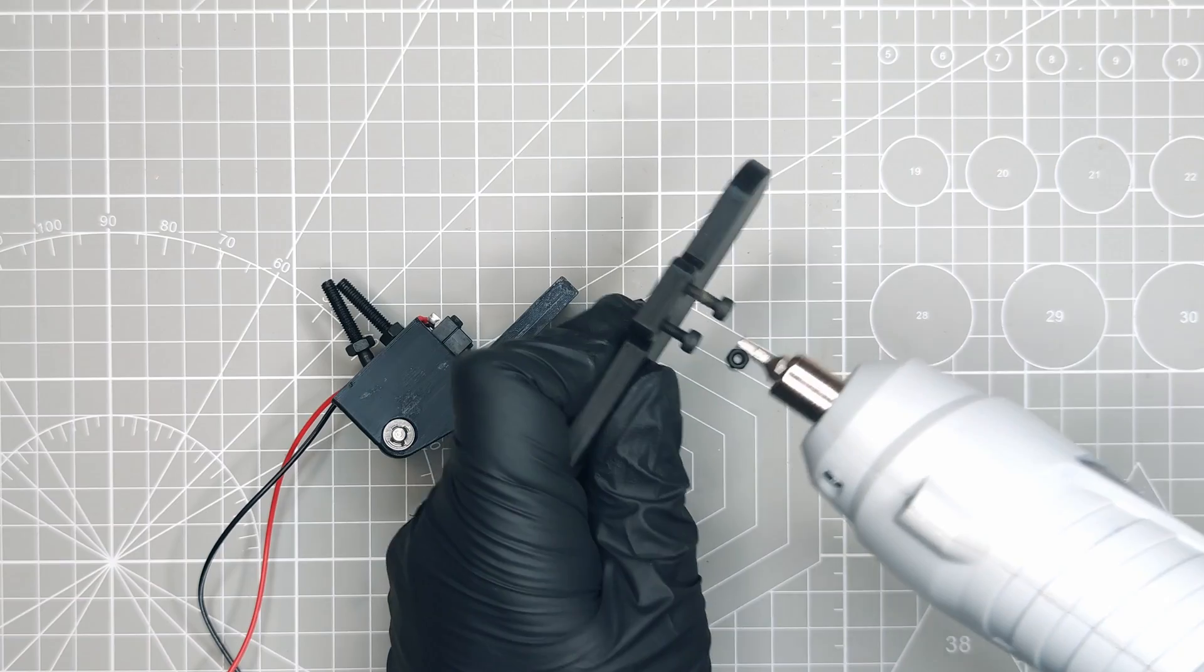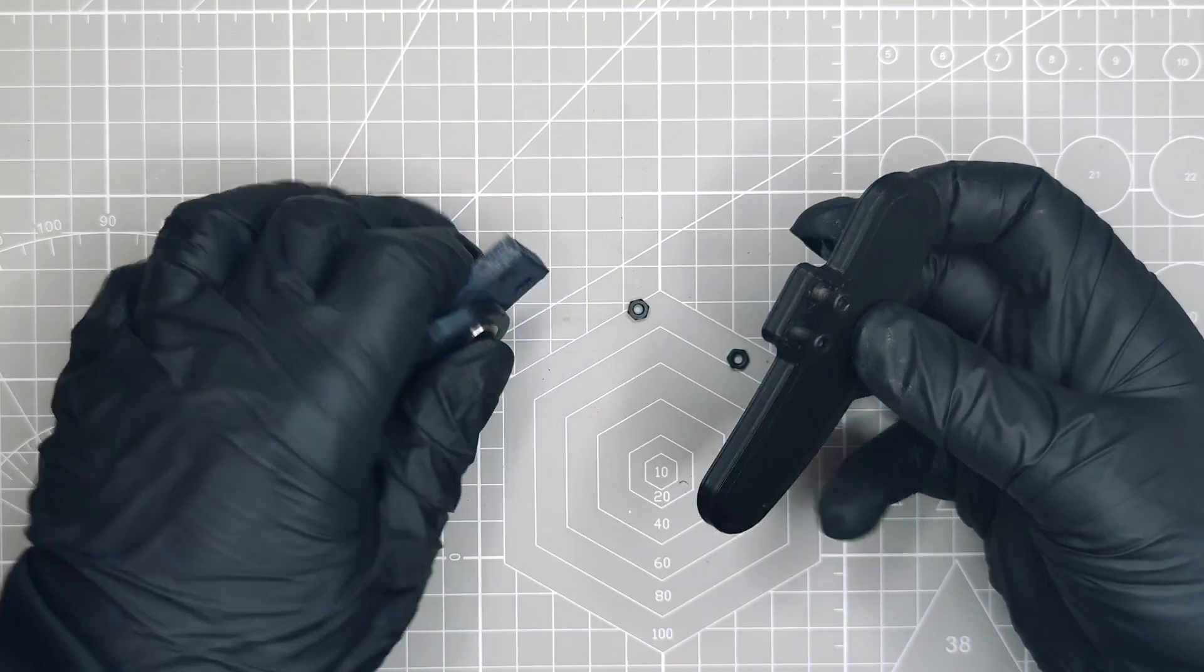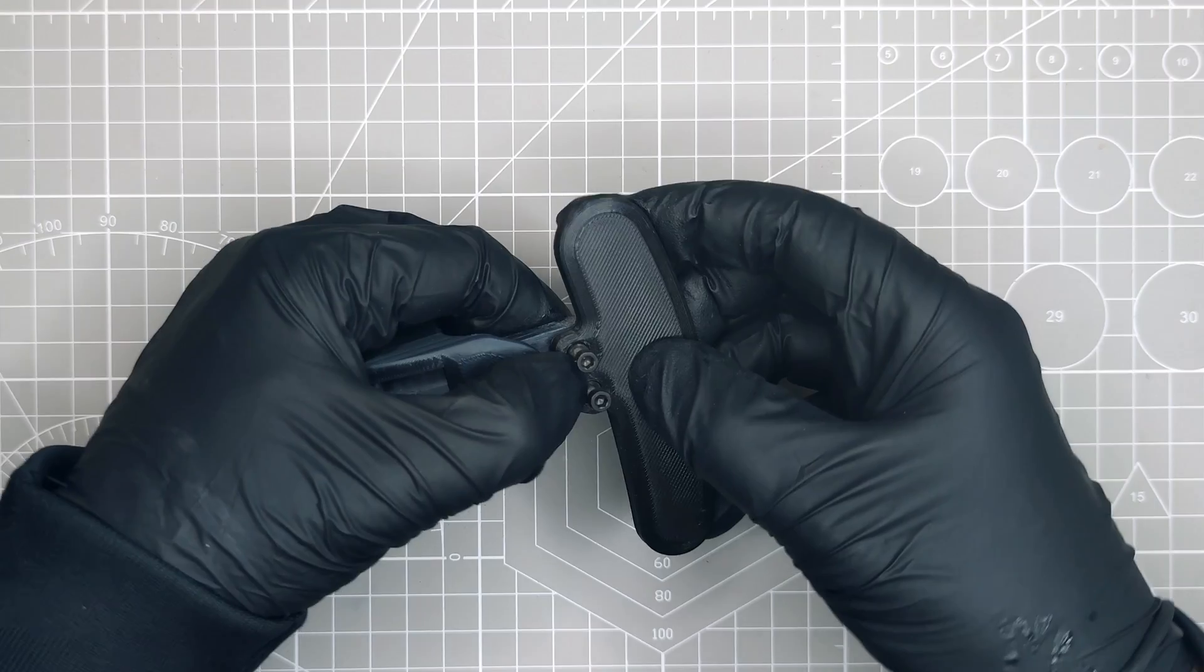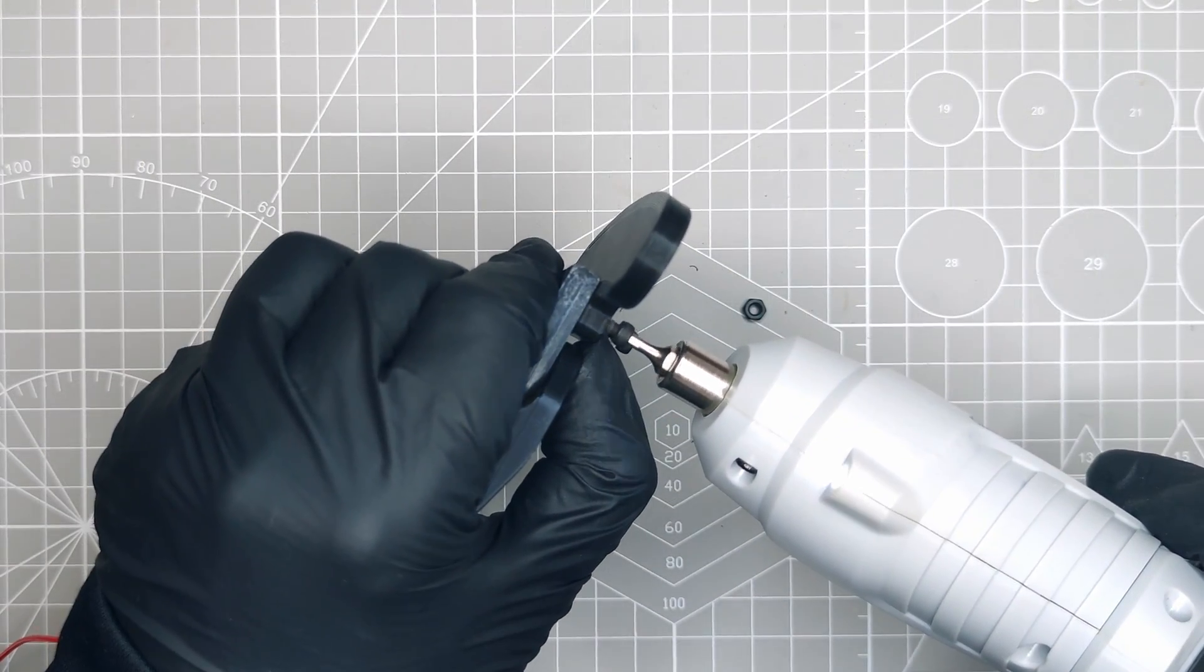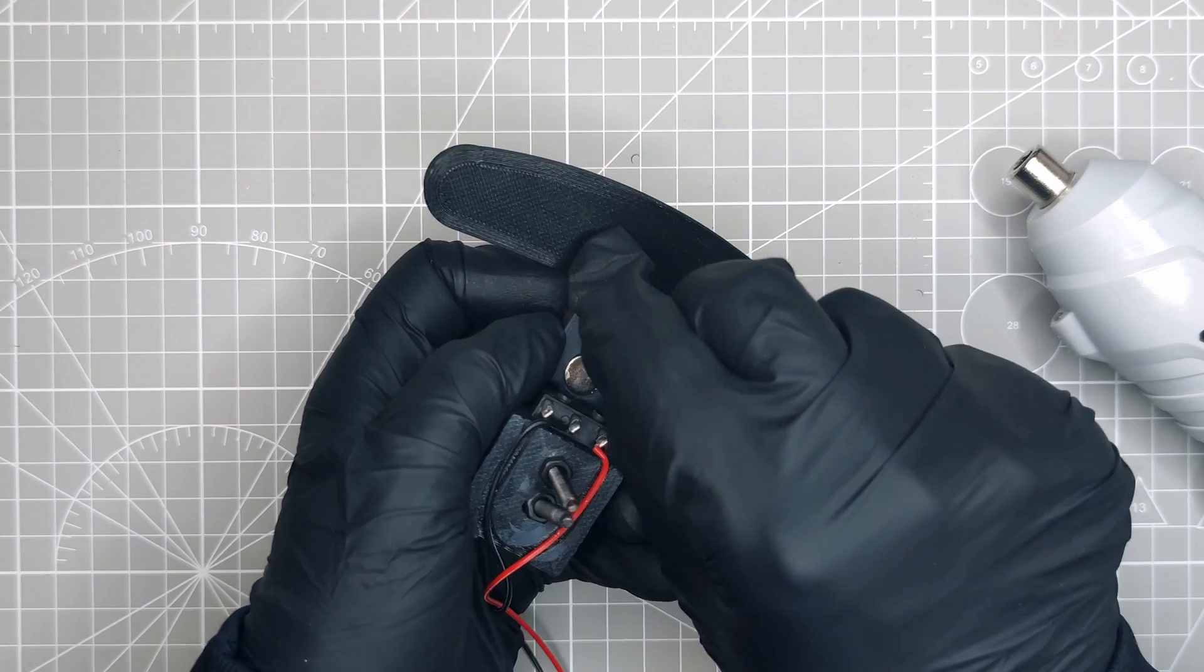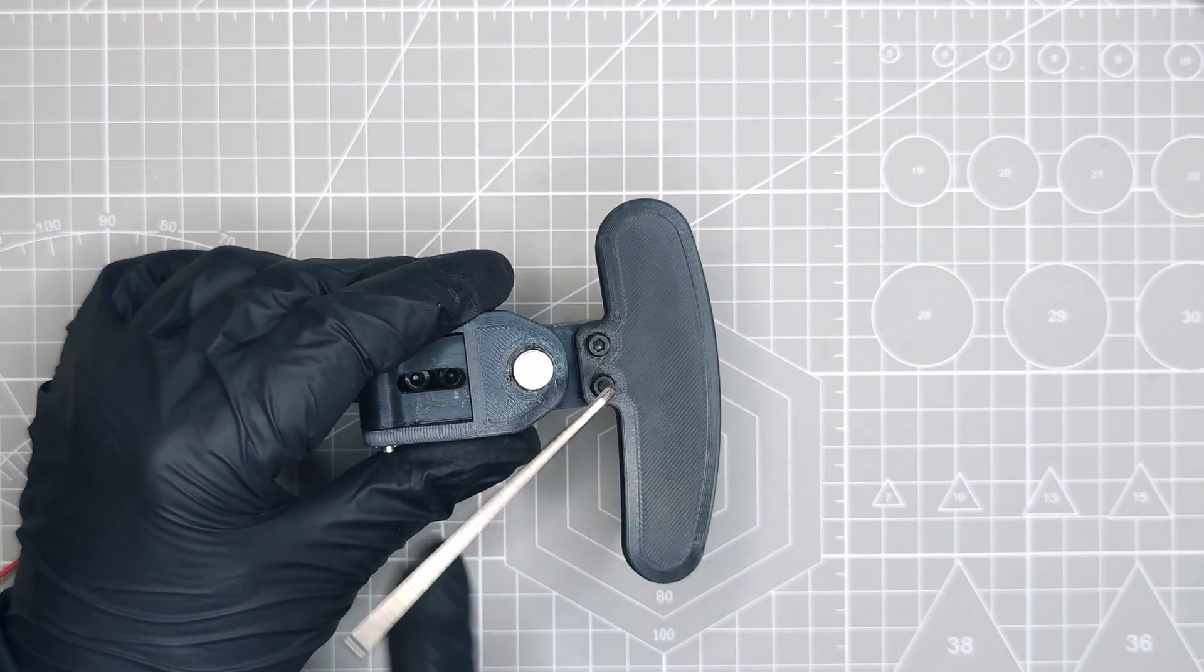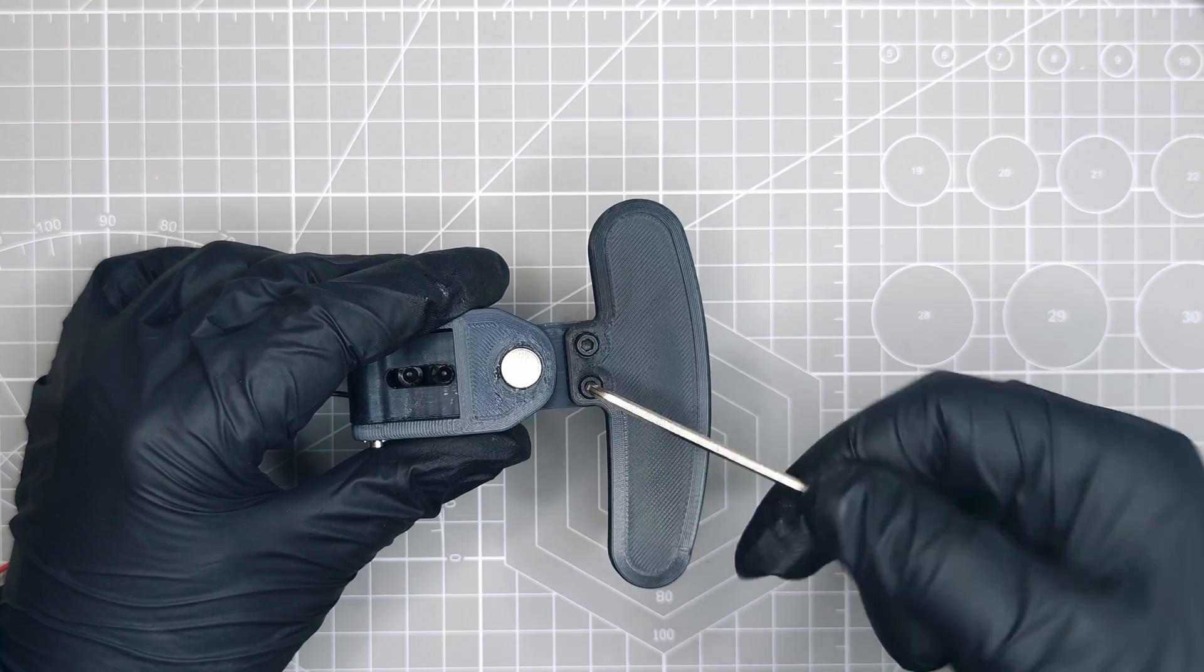We are now on the home stretch. I first install the two M3 bolts on the paddle. I align the paddle with the base and then I screw the two bolts into the base. I place the two nuts at the back of the assembly and then I tighten manually the two bolts until the paddle is nice and secure.